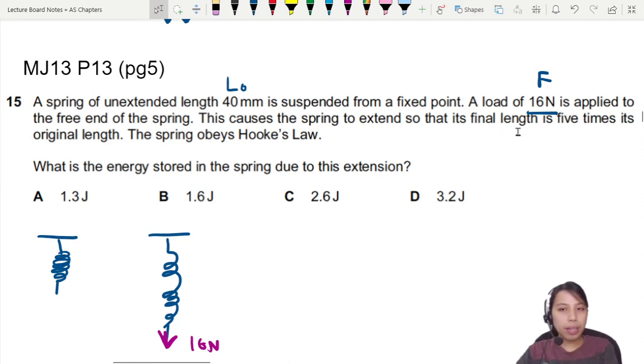So I'm going to say I will pull this spring down and cause it to extend a little further due to a force. Okay, it's going to be our 16 newton. So then this caused the spring to extend so that its final length is five times the original length. So you go from 40 millimeter times five.